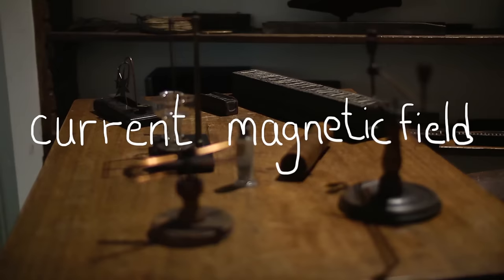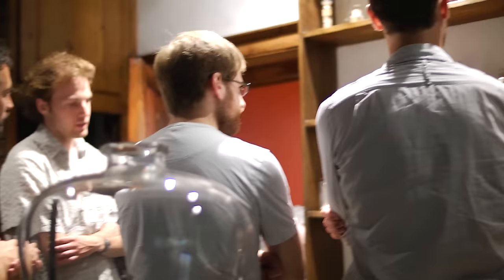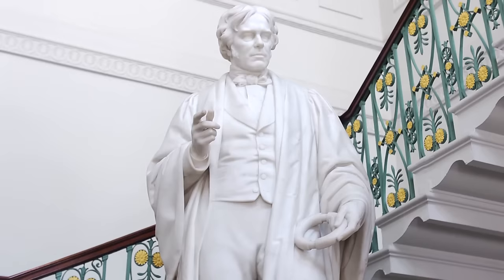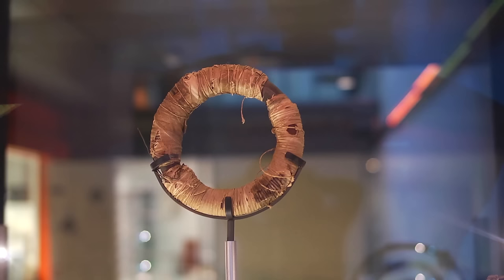In Faraday's time, it was known that electric current creates a magnetic field, but it remained an open question whether the reverse is possible—if a magnetic field could generate electric current. Faraday answered this question with his most famous apparatus, the electromagnetic induction ring.